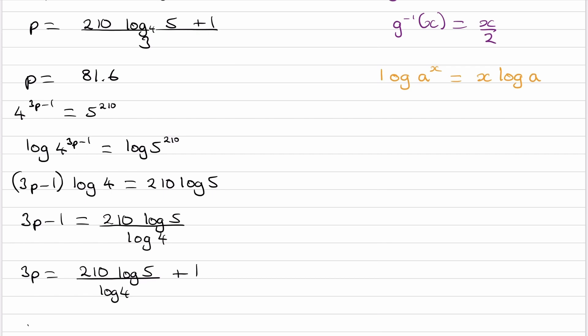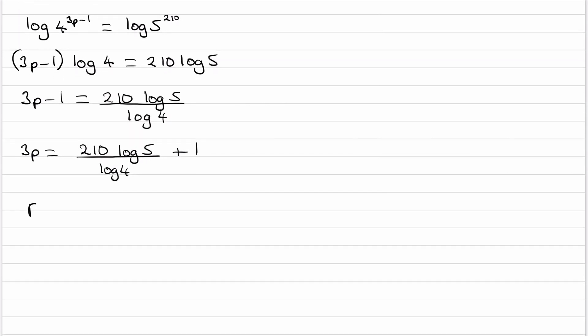So 2.10 log 5 all over log 4 plus 1. And then we're going to divide both sides by 3. So I'll actually just put a third in front. A third of this whole thing of 2.10 log 5 plus 1, and this first bit over log 4 and then close bracket. So then type this in your calculator. You'll get the exact same thing. 81.6.